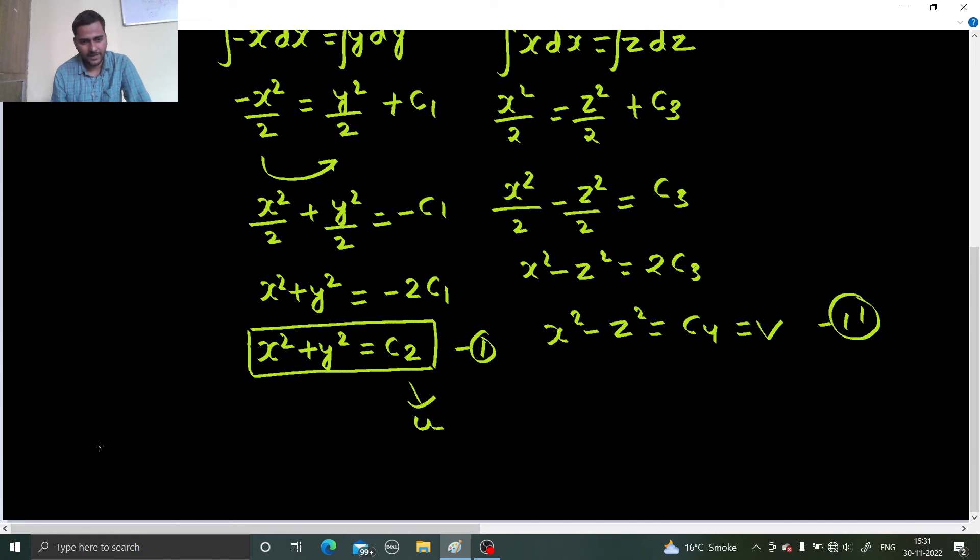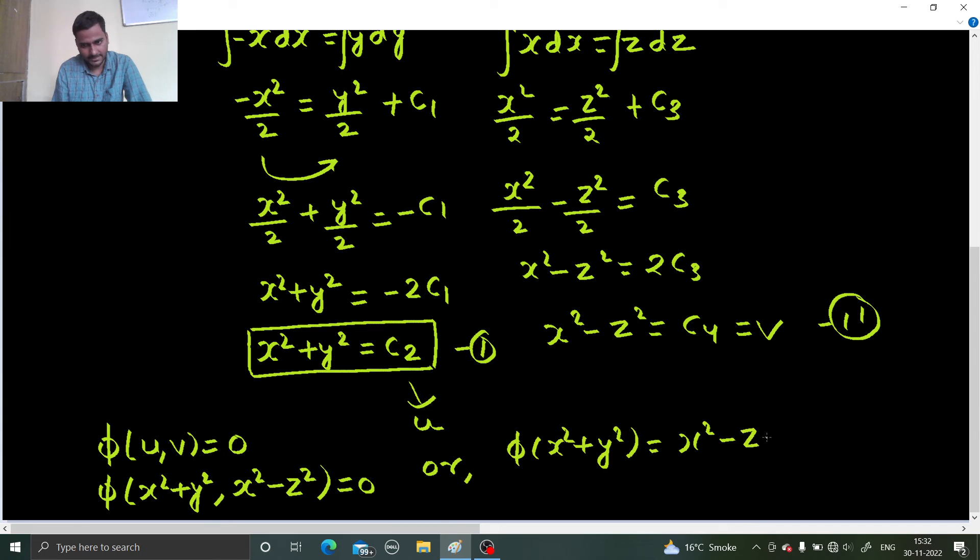Finally, my final solution is of this form phi of u comma v equals to zero. So phi of u is x square plus y square and there I have x square minus z square. This equals to zero. There are other ways to write this also. Phi of x square plus y square equals to x square minus z square.